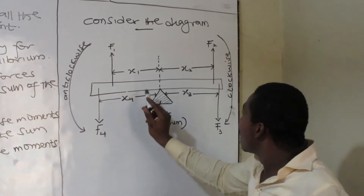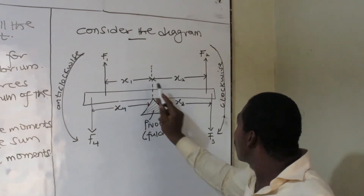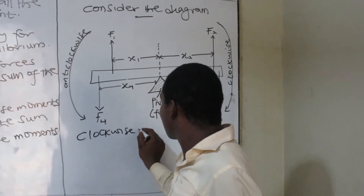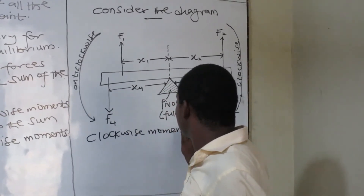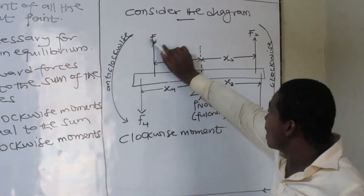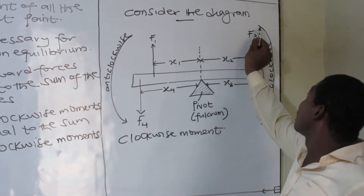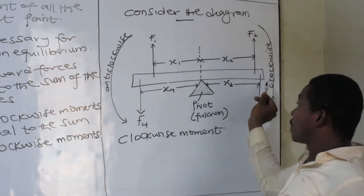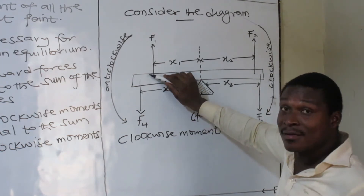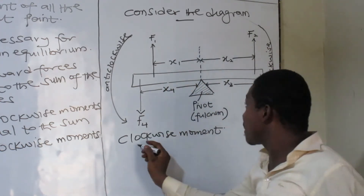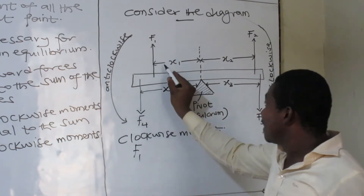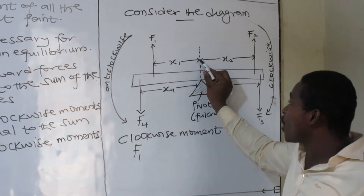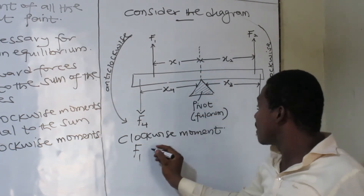Let's look at the clockwise moments. I am going in the clockwise direction. The first force I see here is F1. The perpendicular distance from the fulcrum — the pivot — is X1. That is my first force for the clockwise moment.